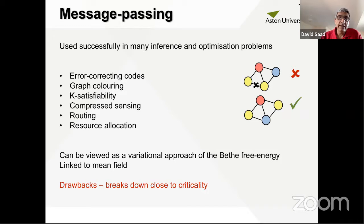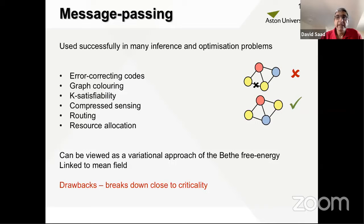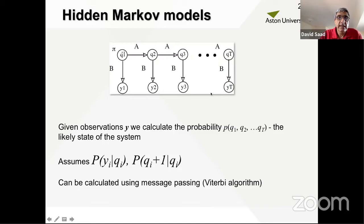Message passing has been successfully applied to error-correcting codes, graph coloring, satisfiability, compressed sensing, routing, and resource allocation — using a statistical physics approach. It breaks down close to criticality, where long-range correlations develop. Message passing can also model hidden Markov models for temporal sequencing: a hidden state evolves over time, and observations Y are linked to the state at each time step. Given the transition probabilities and emission probabilities, message passing evaluates the most likely state sequence.